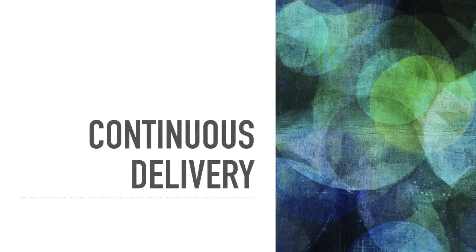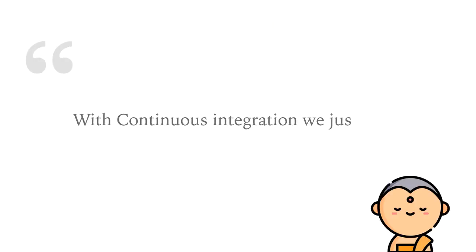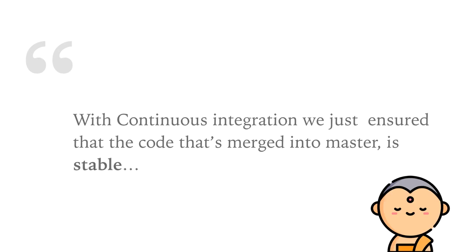In the previous lesson we learned about continuous integration, which helps us ensure that the code merged into the master, mainline, or trunk is stable, giving us high reliability. That practice became really popular with the advent of DevOps and agile.